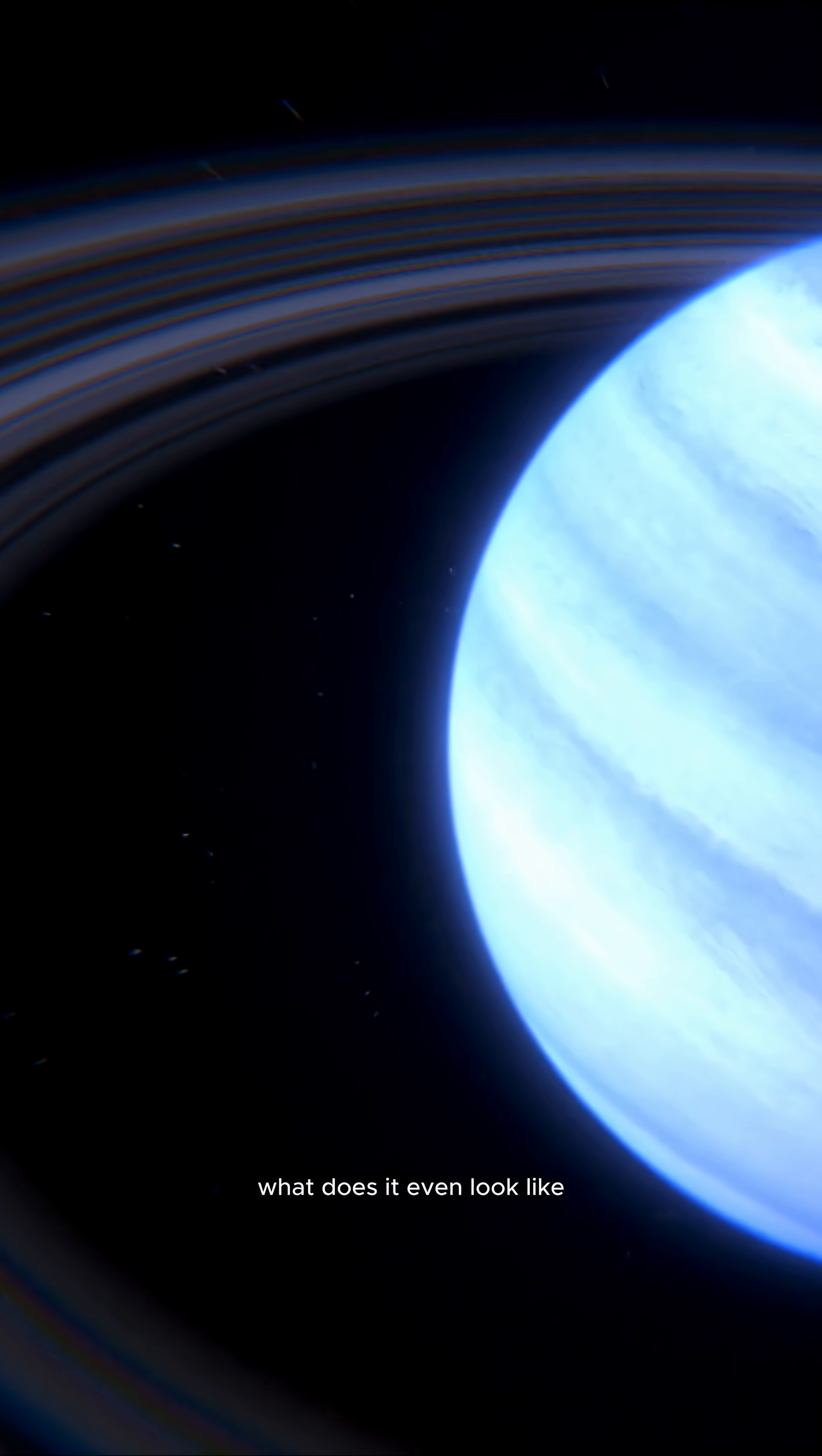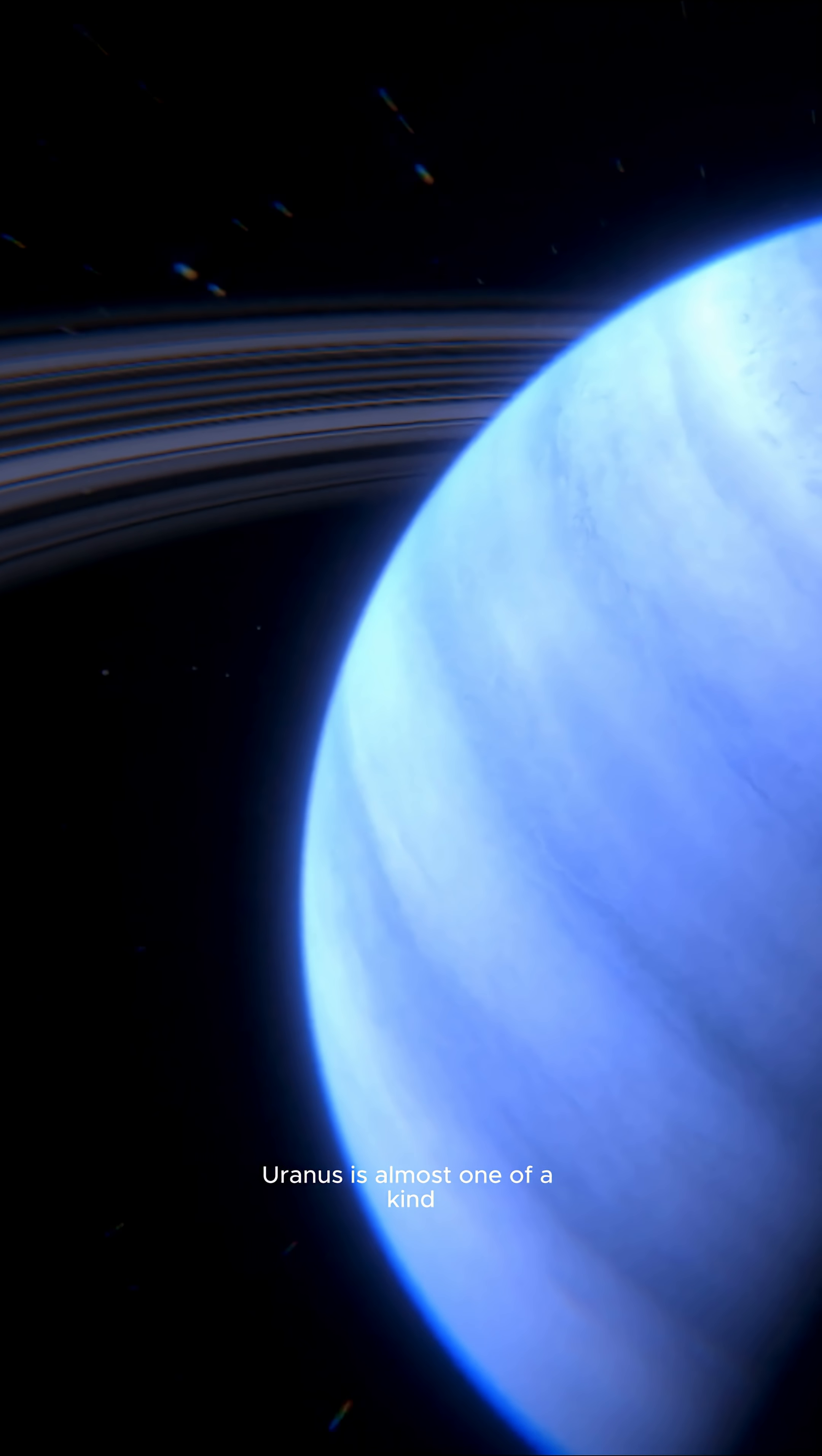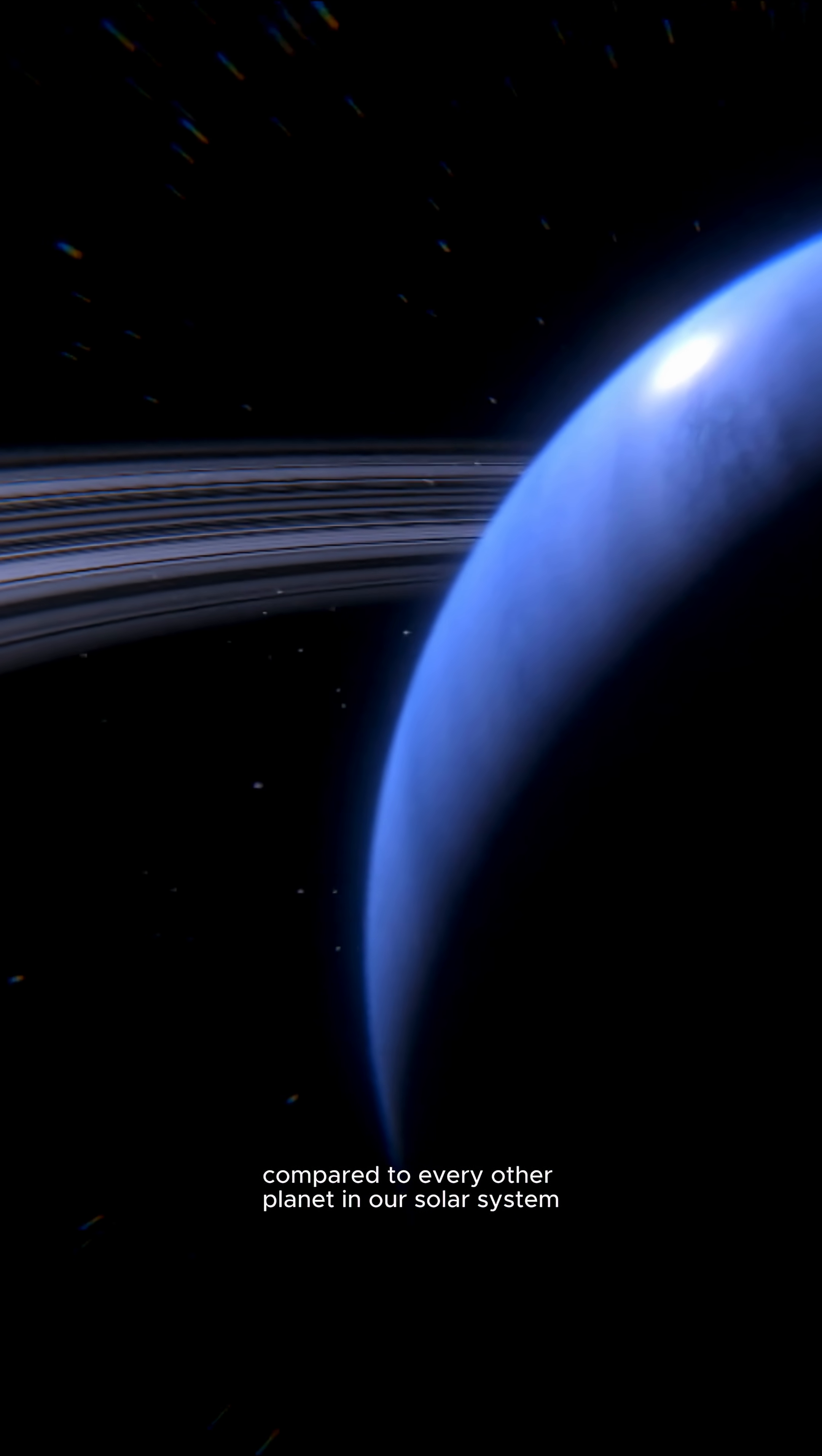What does it even look like when a planet has a unique axis of rotation? Uranus is almost one of a kind. It practically lies on its side compared to every other planet in our solar system.